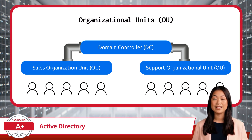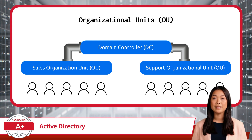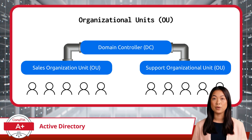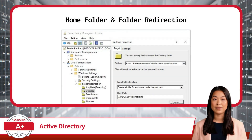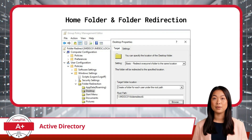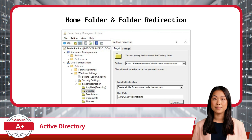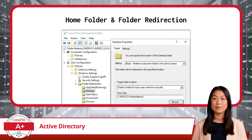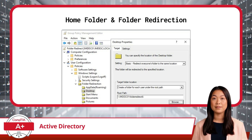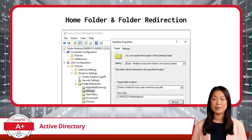Next, we have the Home folder. This is a personal folder assigned to a user where they can store files. Rather than being stored on the local computer, this folder is often stored on a central file server, making it easier to back up and secure. In a similar vein, folder redirection allows administrators to change the location of certain folders, such as desktop or documents, from the local machine to a network server, ensuring that important files are stored centrally and can be backed up regularly.